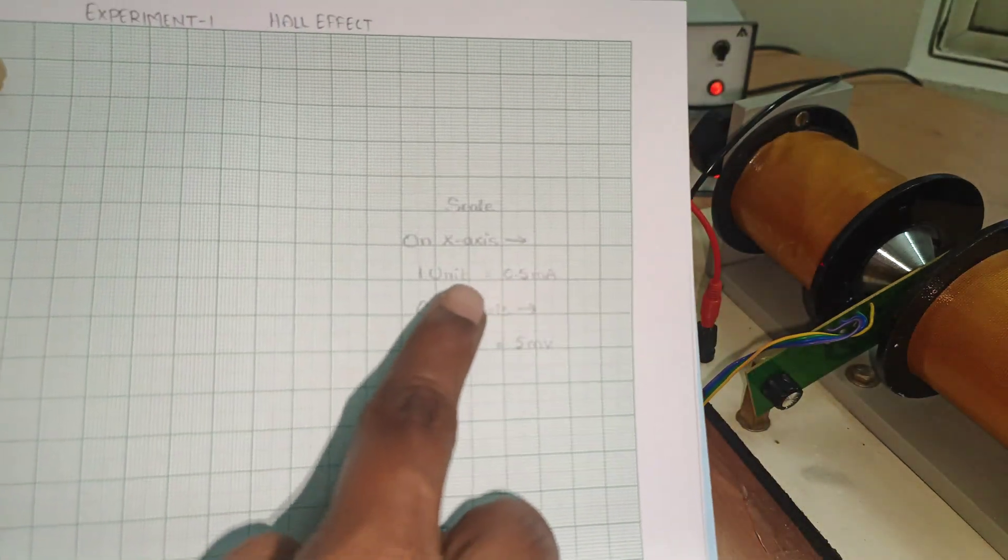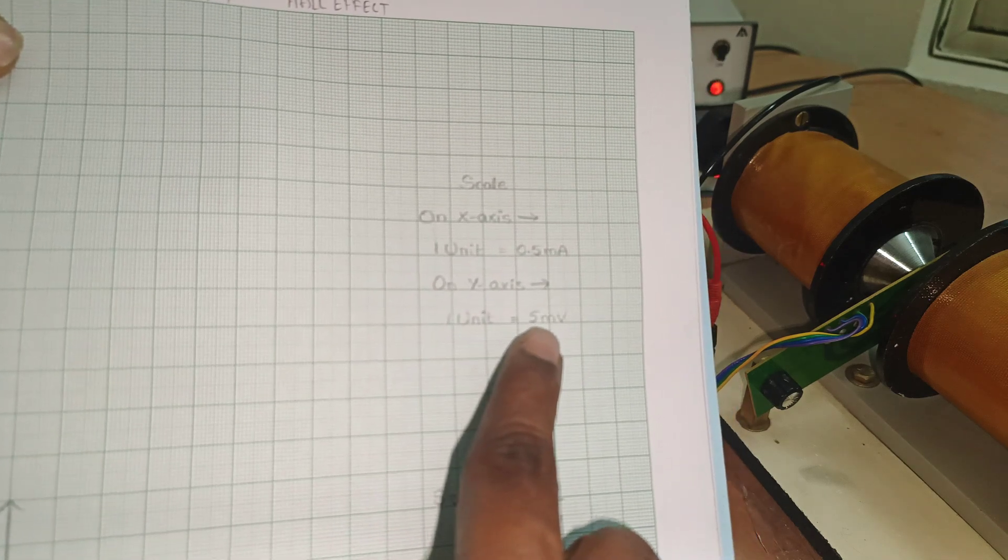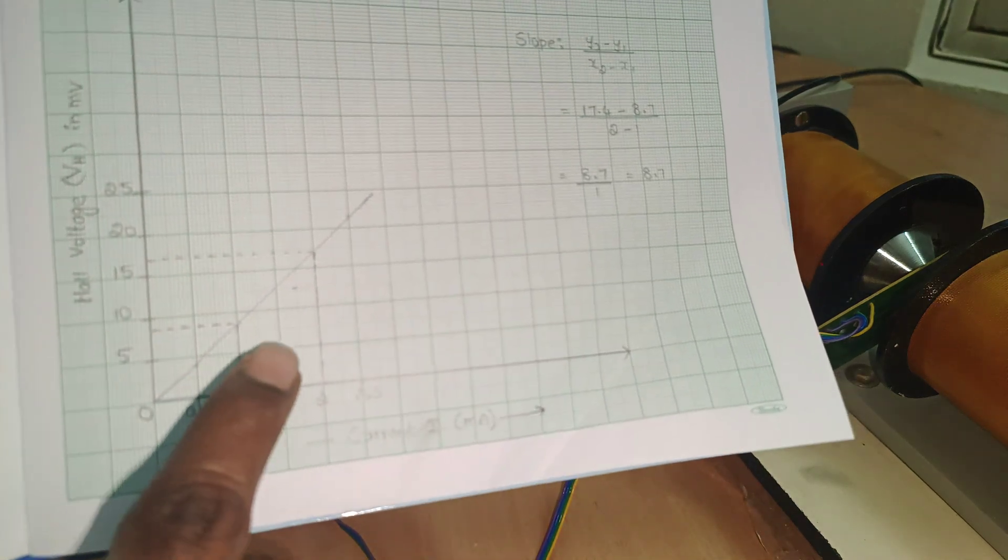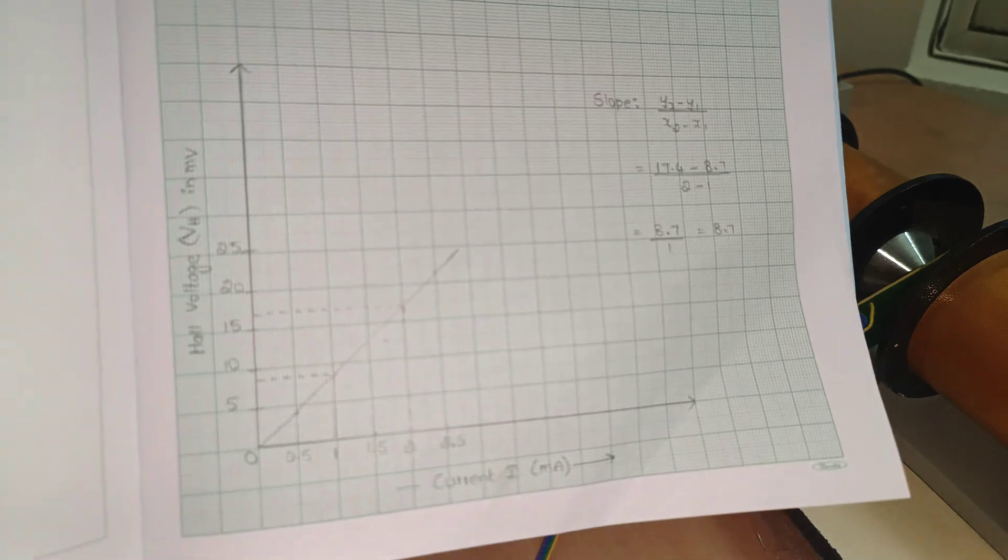On x-axis we have to consider one unit is equal to 0.5 milliampere. On y-axis, one unit is equal to 5 millivolts. By keeping points in this graph, after that connect, we will get the straight line.